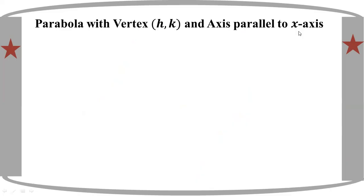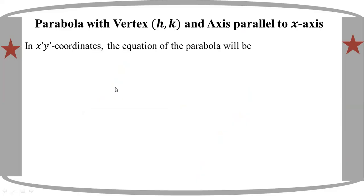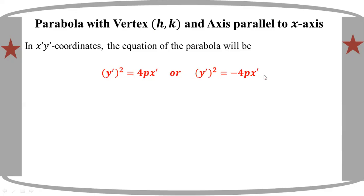This is the equation. In this equation you can see: x-prime squared equals 4pH minus 4pH. x-prime squared equals 4pH minus 4pH. This is a prime form.